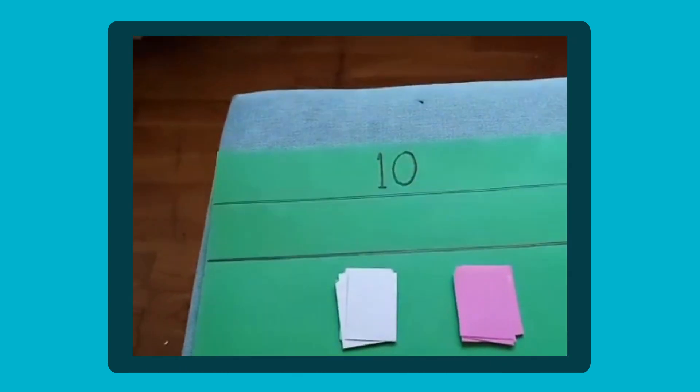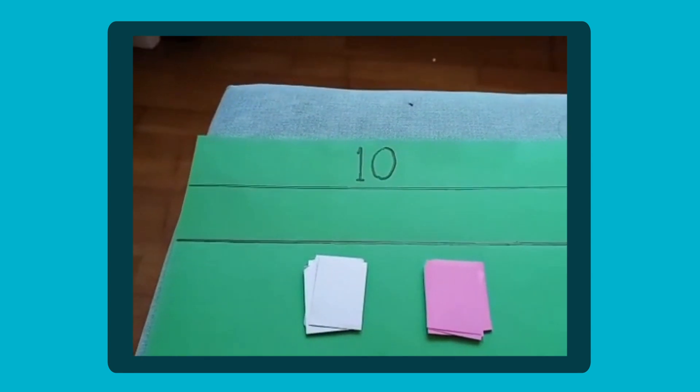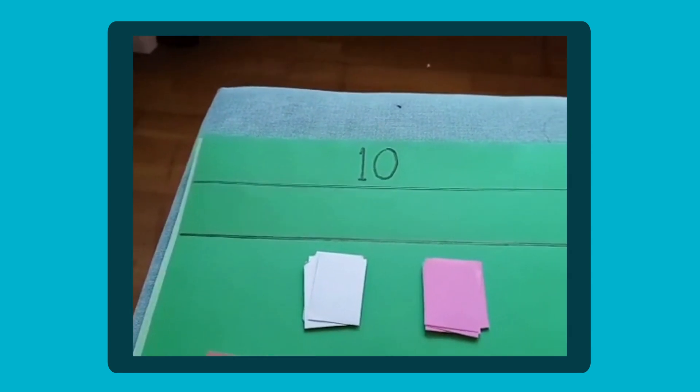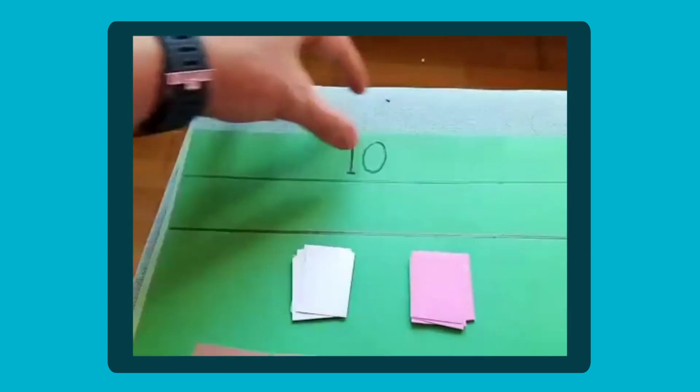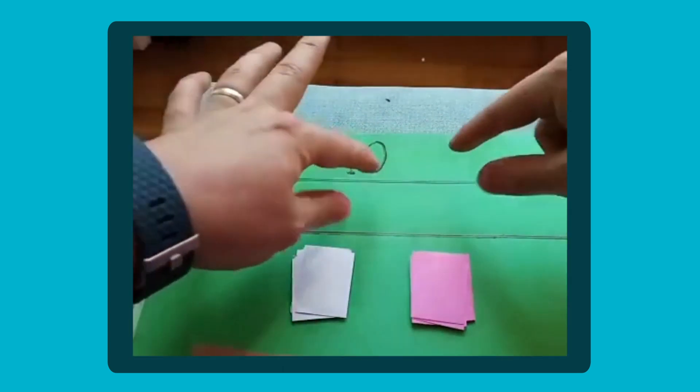So first thing I'm going to show you is a bar model. Bar model is something really useful for getting the actual concept of mathematics, for showing how maths actually works, how numbers actually work and this is a really simple thing that you can do on paper in the same way. So if we accept that this top bar is worth 10, the full length of that is 10, then this bottom bar can be broken into different groups or different sections.